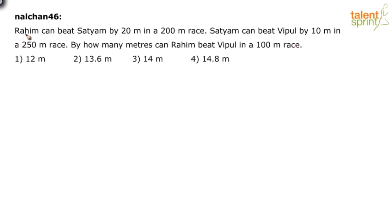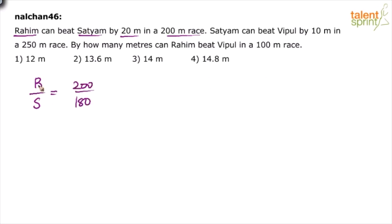Look at the first statement: Raheem can beat Satyam by 20 meters in a 200 meter race. Taking the proportion — the ratio of distances covered — by the time Raheem covers 200 meters, Satyam will cover only 180 meters. In other words, let's say in X minutes Raheem covers 200 meters; Satyam will cover 200 minus 20 = 180 meters.